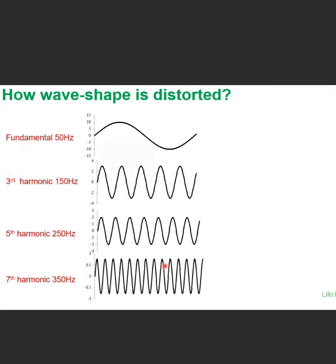Consider that you have different applications where a few VFDs are operating on 3rd level of harmonics and a few VFDs are operating on 7th level of harmonics, and some devices are inducing 3rd level of harmonics in your overall system. So what will happen? A plus B plus C of harmonics will get combined, and the result will be this distorted waveform. So this is what harmonics is.